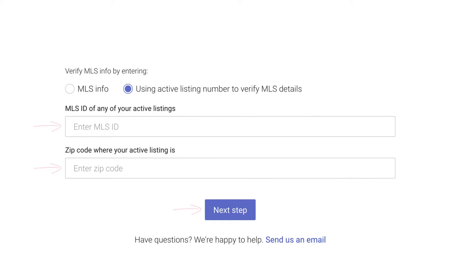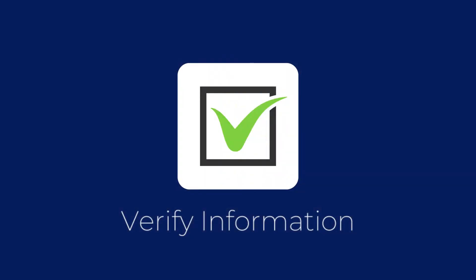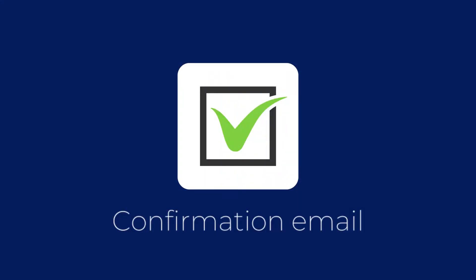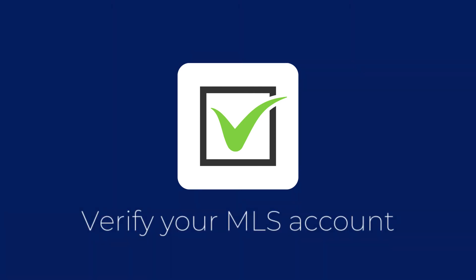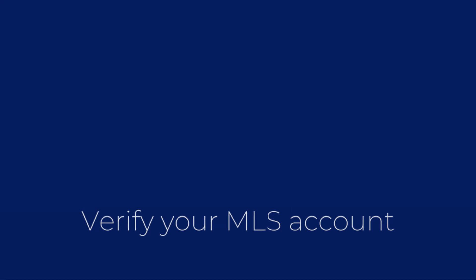Once you enter your MLS information and click the button, wait a few seconds while we verify your information. If your info is verified, an email will be on its way to the email address from the MLS roster. The last step to create your professional account is to open that email and click the button to verify your MLS information. That's it! You'll see a confirmation screen and receive a confirmation email letting you know that your account is ready to use.